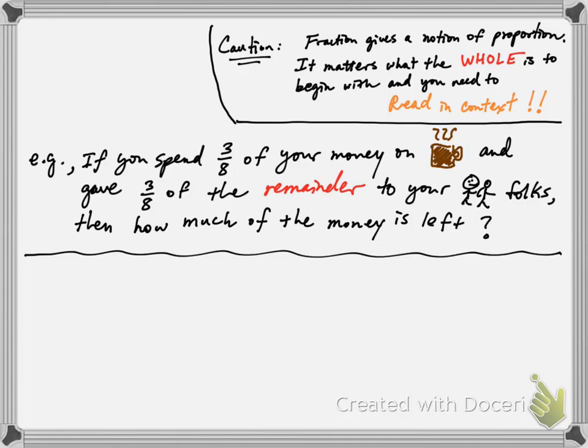If you answered two-eighths, then you're certainly not seeing the change in the whole. This is the wrong way of thinking about it. You see that three-eighths is taken on coffee, and another three-eighths is also taken for folks. So it seems like six-eighths of the total is taken and the remainder from eight pieces, which is two-eighths. Well, if you think this way, then you're not seeing that there's a difference between a proportion of what.